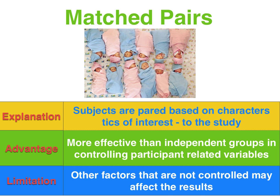Matched pairs is more effective in controlling participant-related variables than the independent groups design. But a limitation is that, particularly when we match people based purely on things like age and gender, there might be other factors that come into play affecting the DV. For instance, if we were looking at the impact of sleep deprivation on memory, things like a person's short-term memory capacity and their normal sleep routine in terms of hours generally slept would influence the result.